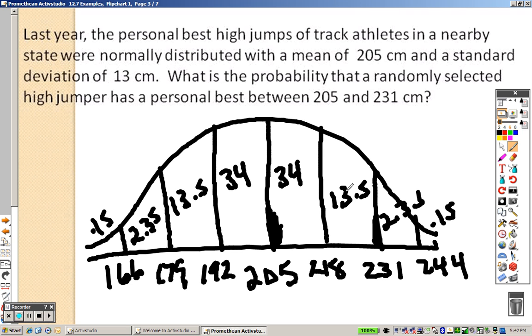Now, I don't need all the percents, all I need is between 205 and 231, so I take those two numbers, add them together, and that gives me 47.5% as my answer.